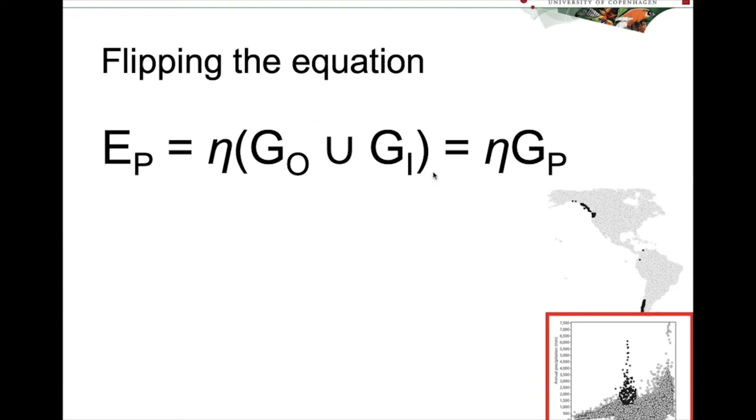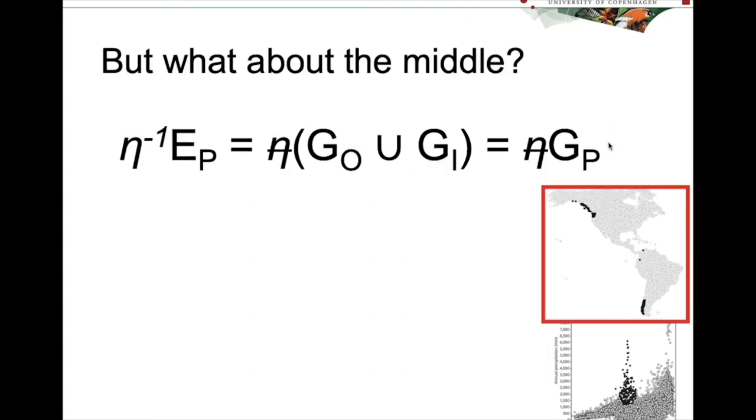So what we do is we flip the equation. And so here we're getting ready for a little bit of algebra. We have our EDAs here. So this is the set of environmental conditions represented by this term, and the same for this term in the middle, which I will cover in a little bit. So we want to get rid of this term because we want to be talking about geographic space where we've projected or transferred our model. So just like you do in algebra, you can divide out that EDA and then you have inverse EDA EP. And now we're talking about geographic space.